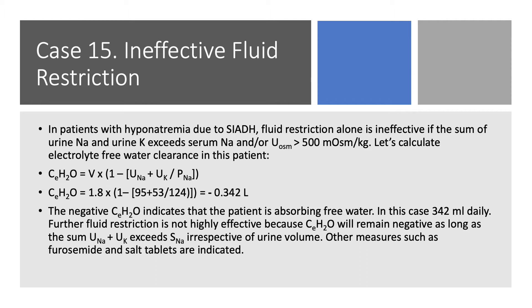If you want to be more sophisticated, you calculate electrolyte-free water clearance. We have urine volume, we add up urine sodium and urine potassium, and divide by plasma sodium, and we get minus 0.342. The minus means that the patient is absorbing 342 milliliters of free water. So fluid restriction is not going to work. As long as urine sodium and urine potassium is higher than plasma sodium, no matter what you do with fluid restriction, you're still going to absorb some water.